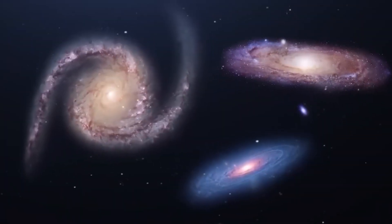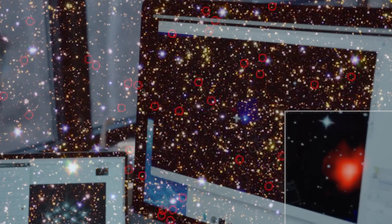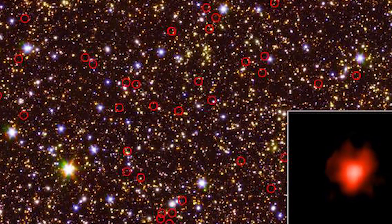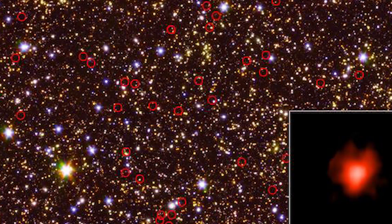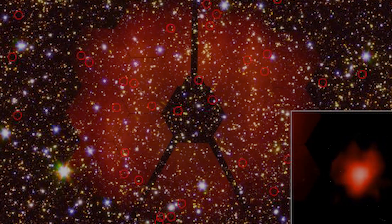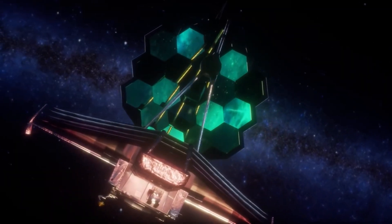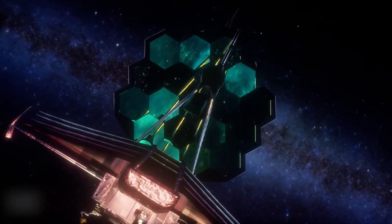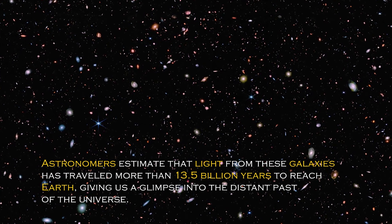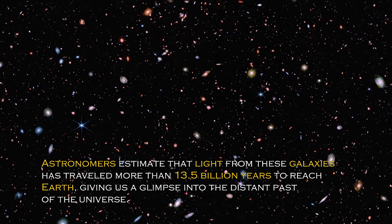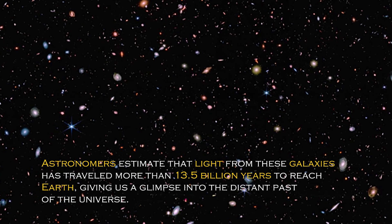Another stunning discovery stumped scientists, when researchers found the primordial galaxies at the edge of the universe. They were skeptical about their authenticity. Some thought they might be nearby galaxies in disguise, so they shared the data with other scientists around the world. Amazingly, the James Webb Space Telescope confirmed that these ancient galaxies are real. Thanks to this revolutionary telescope, we can now observe the oldest galaxies ever seen. Astronomers estimate that light from these galaxies has traveled more than 13.5 billion years to reach Earth, giving us a glimpse into the distant past of the universe.